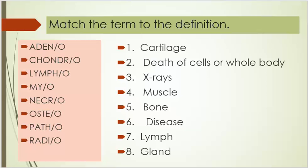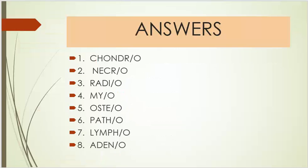Number seven, lymph. Number eight, gland. Answers: Number five is osteo, number six is patho, number seven is lympho, number eight is adeno.